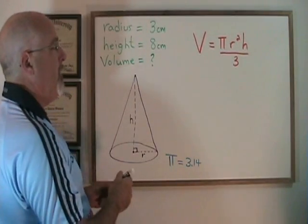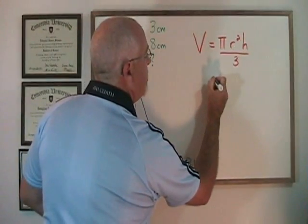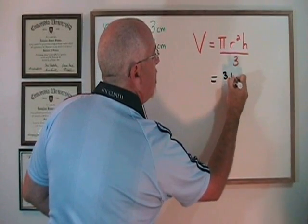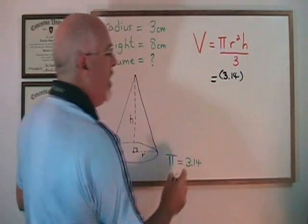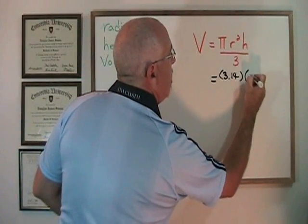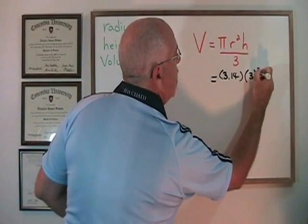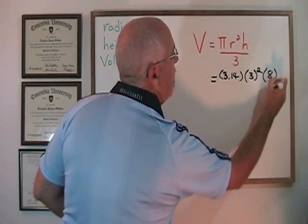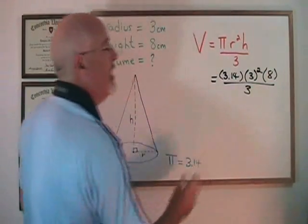I'm just going to plug into the equation. For pi, we're using 3.14 in these examples. The radius 3 is squared. The height is 8 over 3.